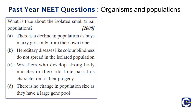Next question: what is true about isolated small tribal populations? Options include: a decline in population as boys marry girls only from their own tribe; hereditary diseases like color blindness do not spread in an isolated population; wrestlers who develop strong body muscles in their lifetime; and no change in population size.